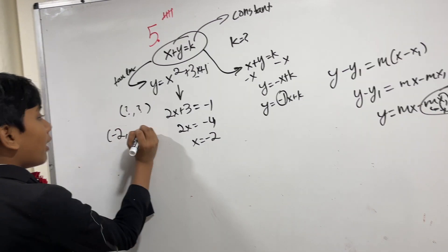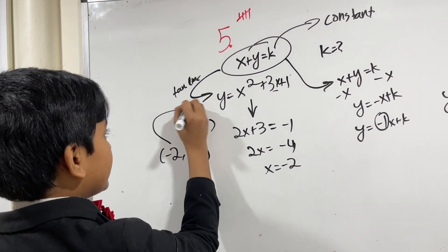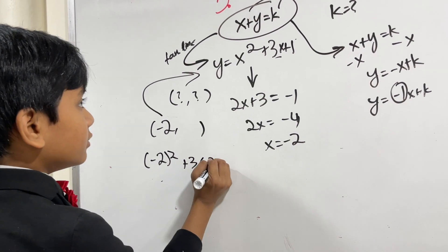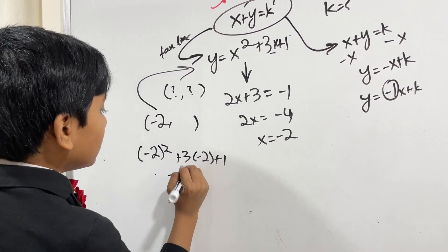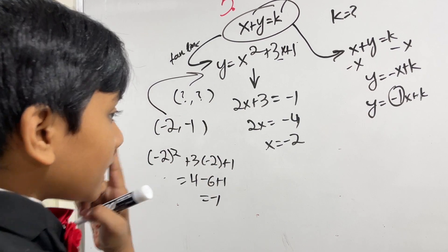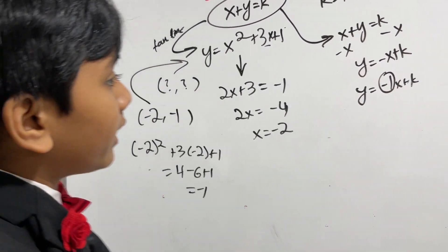Now, to find the y-coordinate, what we have to do is plug in this x-coordinate here, and we get minus 2 squared plus 3 times minus 2 plus 1 is equal to 4 minus 6 plus 1, which is minus 1. So that means our coordinates are minus 2, minus 1.